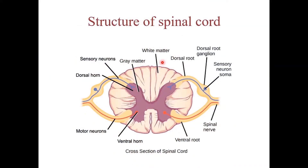The spinal cord is made of grey and white matter, just like other parts of the central nervous system. Its cross-section shows 4 surfaces: anterior, posterior, and 2 lateral surfaces. It has an anterior fissure and 3 sulci: anterolateral, posterolateral, and posterior sulcus. The grey matter is butterfly-shaped and occupies the central part of the spinal cord. It is comprised of neural cell bodies and has anterior, lateral, and posterior horns. The white matter surrounds the grey matter and is made of axons.